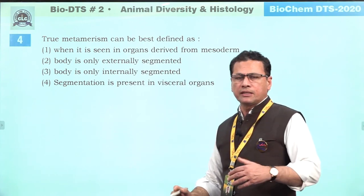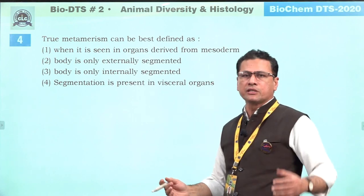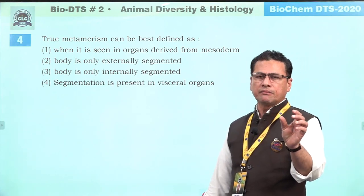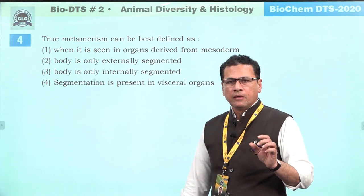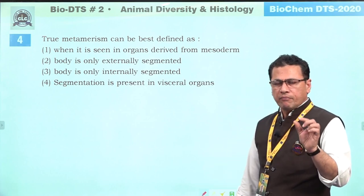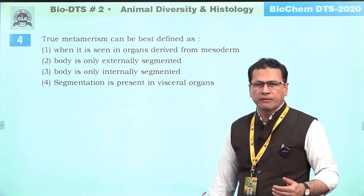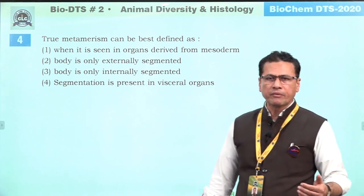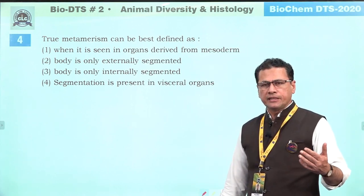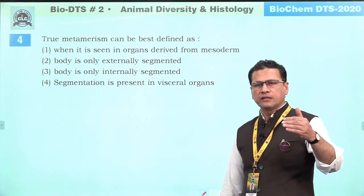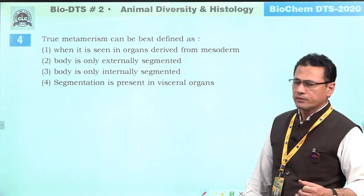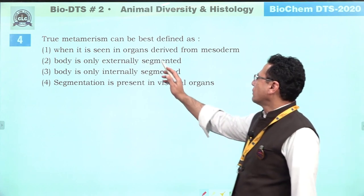For example in vertebrate bodies — fishes, amphibians, reptiles — muscles show metamerism in the form of myotomes, the vertebral column shows metamerism in the form of vertebrae. These are all mesodermally derived structures. In earthworms, leeches, and similar animals, the segmentation is also seen in mesodermally derived structures. So the correct answer is number one.